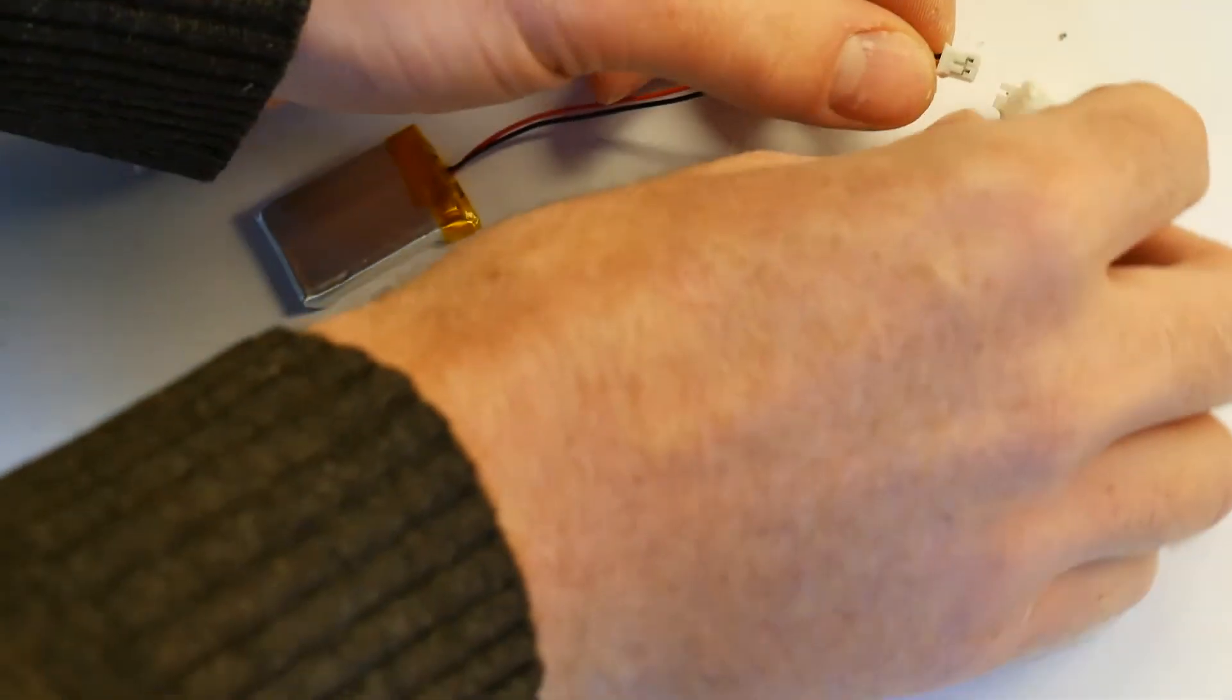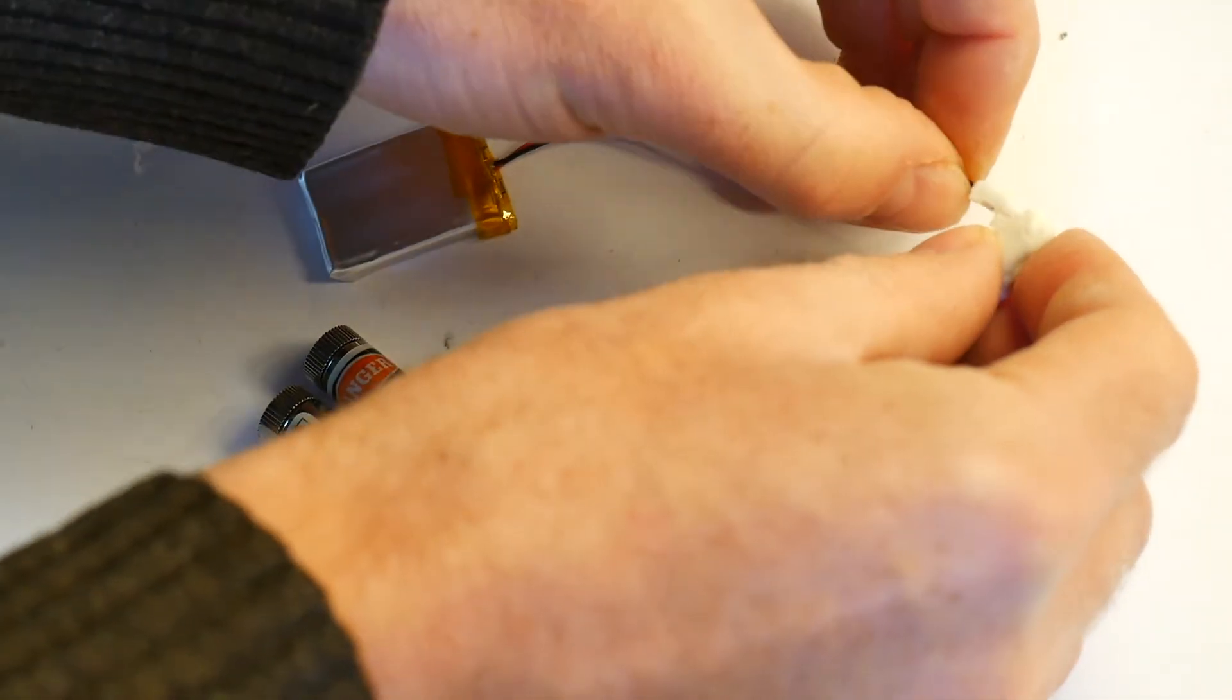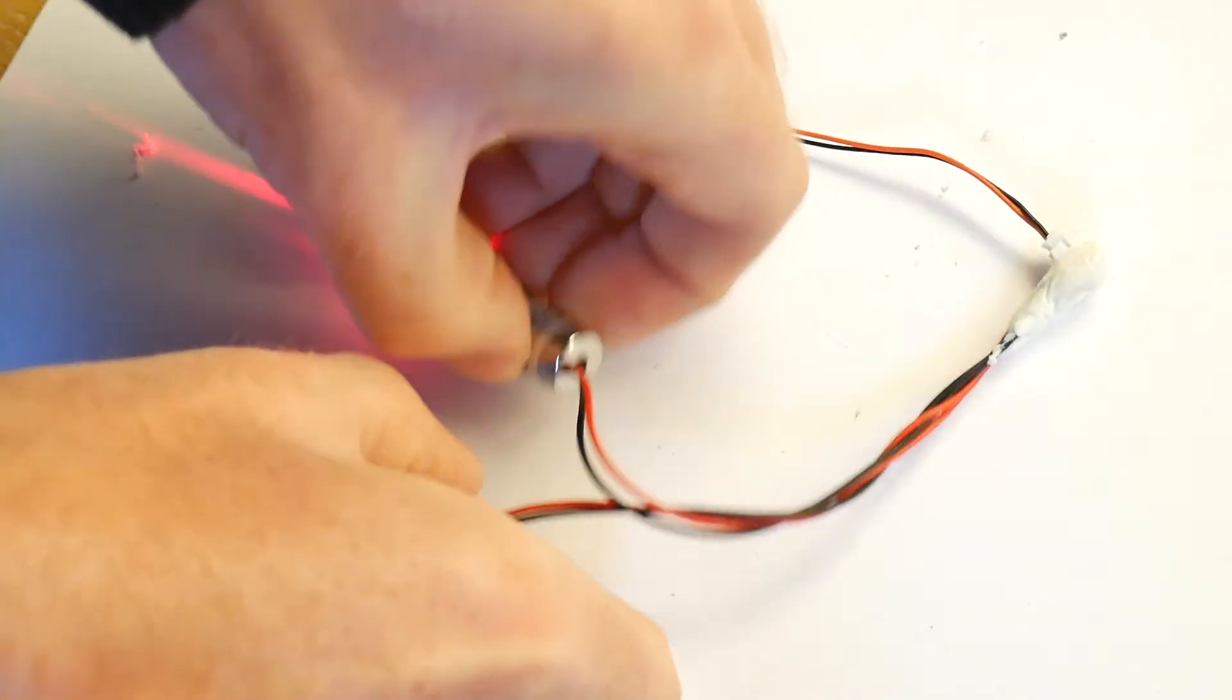Once you've done that, attach the battery and you can start using them to project a rectangle pattern. You might need to rotate the ends slightly just to make sure that they're properly focused.